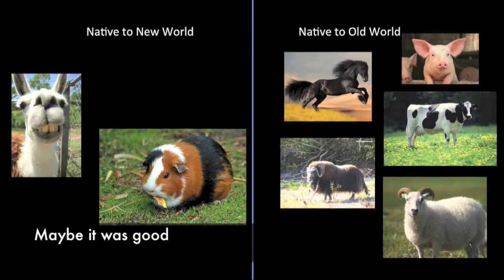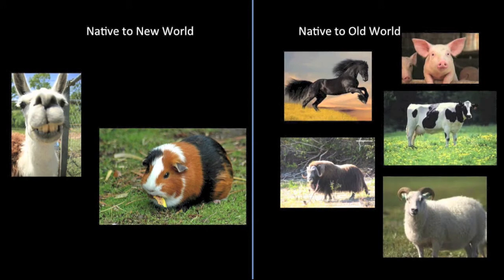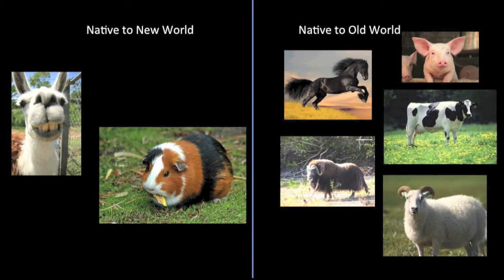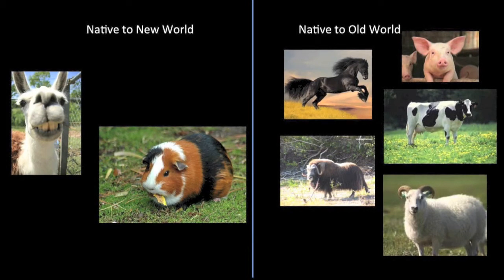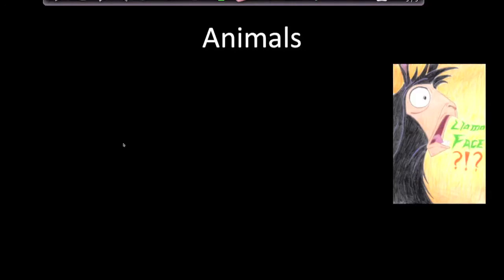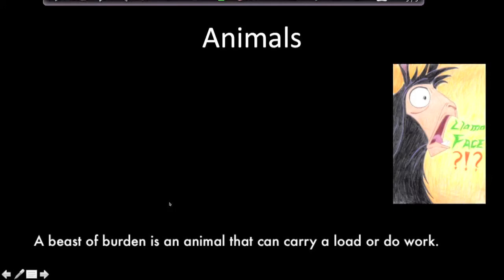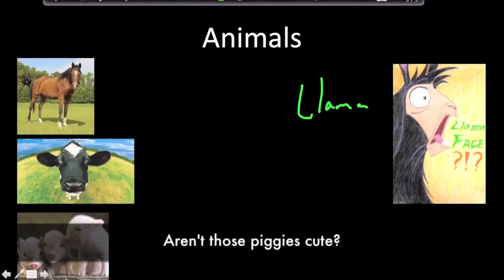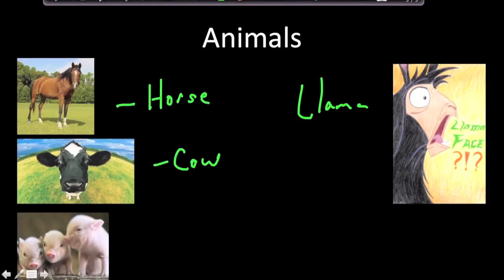Let's talk about animals exchanged during the Columbian Exchange. With crops and plants, it was mostly the Old World that benefited. However, with animals, it was mostly the New World that benefited. Prior to the Columbian Exchange, the New World's only beast of burden was the llama — and llamas can't hold very much weight. After the Columbian Exchange, horses, cows, and pigs were introduced to the Americas.